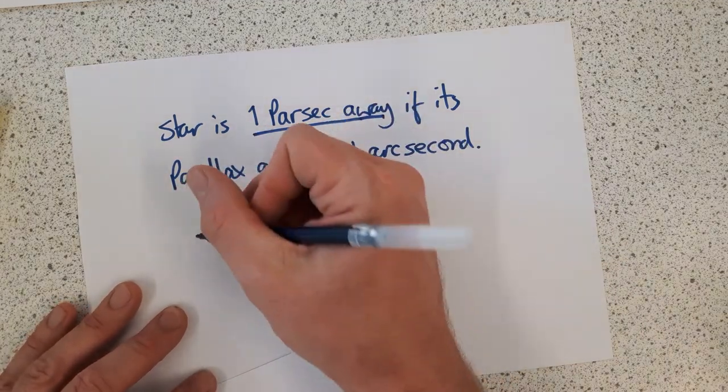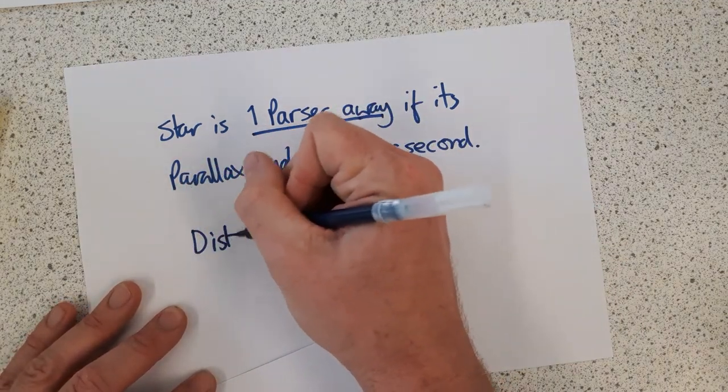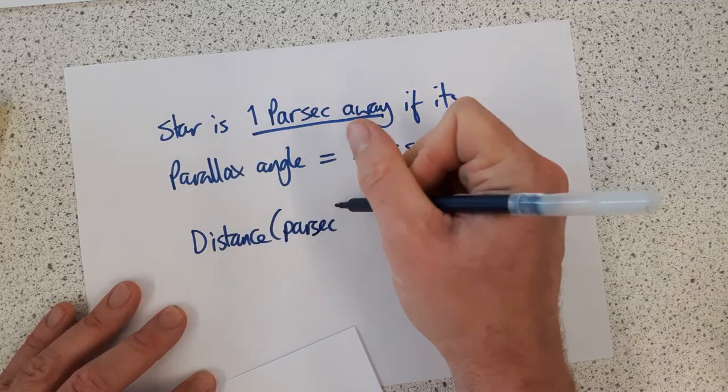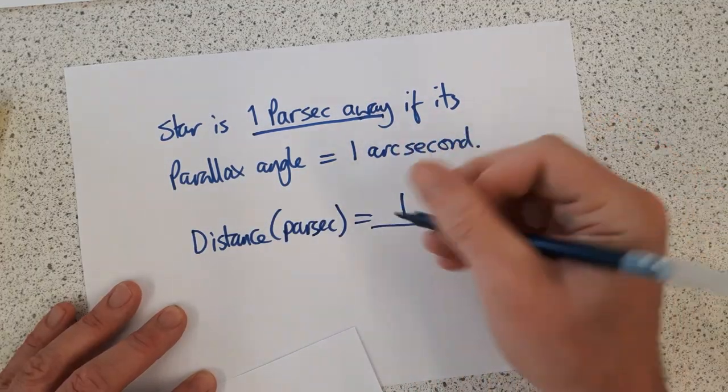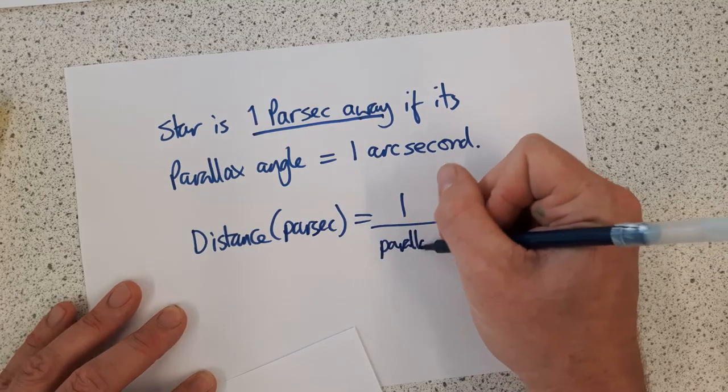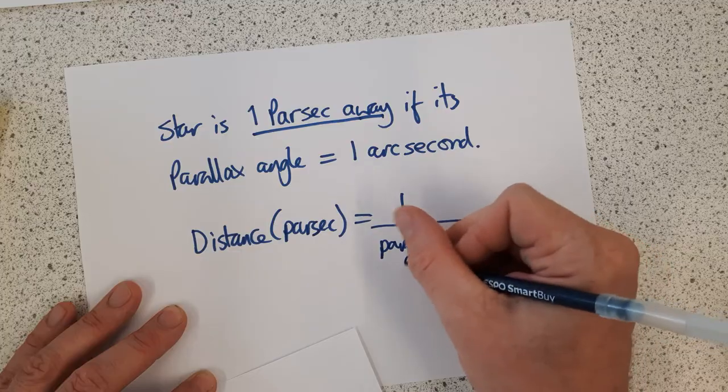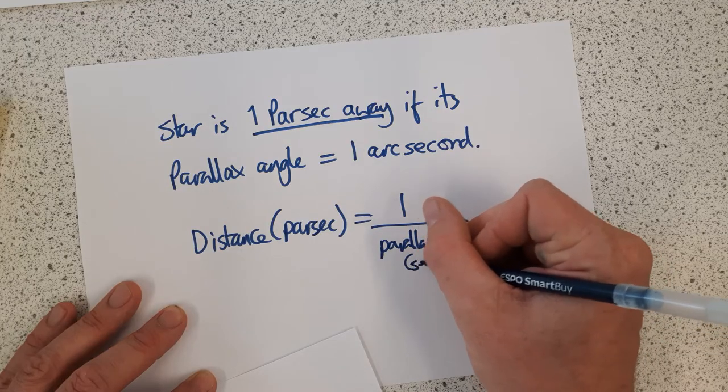Mathematically, we do it like this. The distance of a star in parsecs is 1 over the parallax angle when the parallax angle is measured in arc seconds.